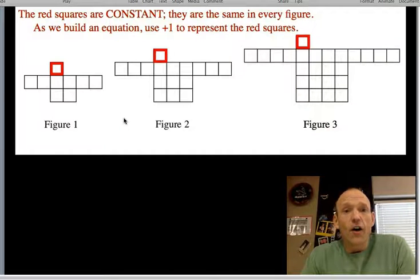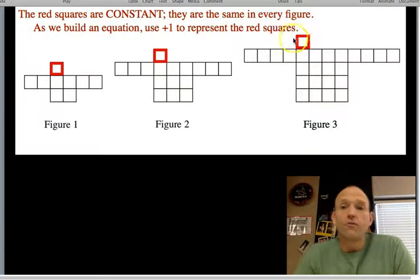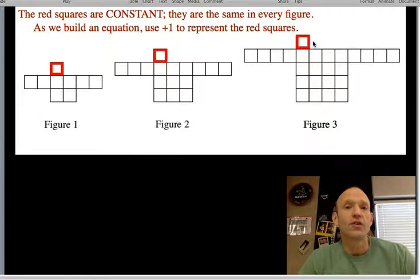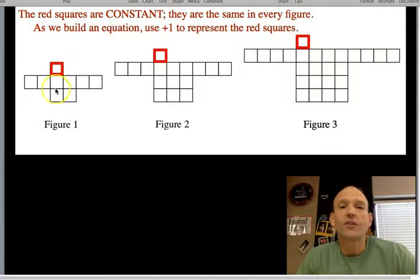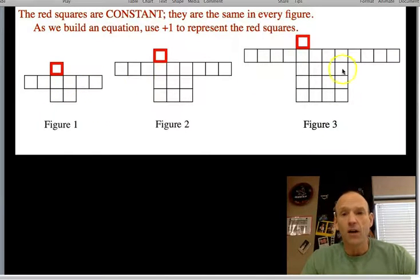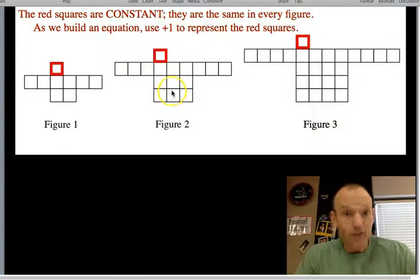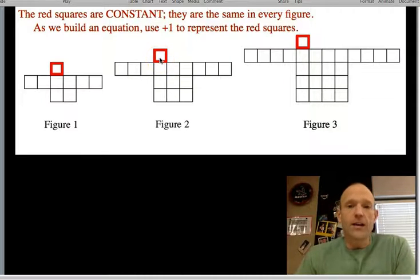And the red squares are constant. You can see they're the same in every figure. As we build an equation, which is our goal here, we're going to use a plus one to show, to account for those red squares. So that's plus one, which means no matter what our equation says, it's always going to be all this stuff plus one.